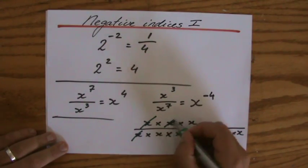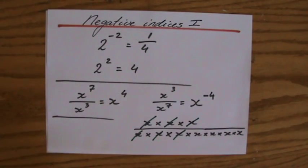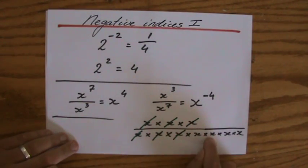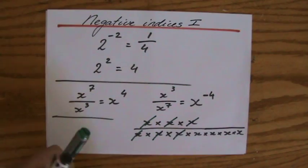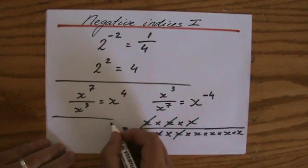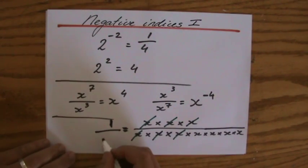Common factors—they're all gone. So what is left in my denominator? 1, 2, 3, 4—x to the power 4. So in my numerator I have 1 left over; in my denominator I have left x to the power 4.